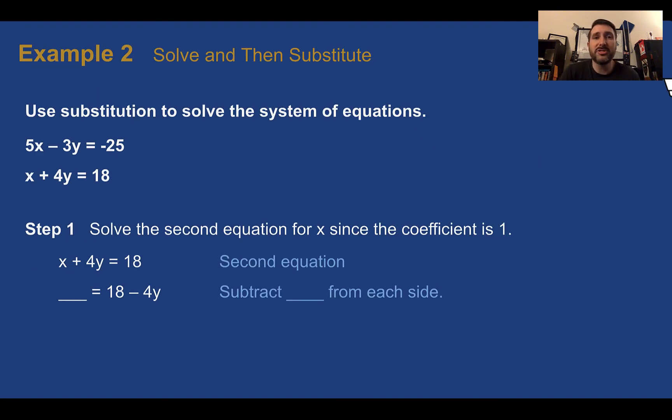Example 2, solve and then substitute. Use substitution to solve the system of equations. Here we're given two equations where neither of them are solved for the variable. Now, after lessons 3 and 4, you may choose not to use substitution to solve these, however, you still can, it is one of your options. So I can see in the second equation here that x does not have a coefficient, or I should say the coefficient is 1. We can easily solve for x just by subtracting 4y from both sides. So if I subtract 4y from both sides, it's gone off the left, x is by itself, so x is equal to 18 minus 4y.